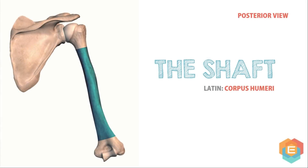Lastly, the shaft. The shaft is a long part of the bone extending between its upper and lower ends. It is cylindrical in the upper half, but flattened and triangular posteriorly in the lower half.